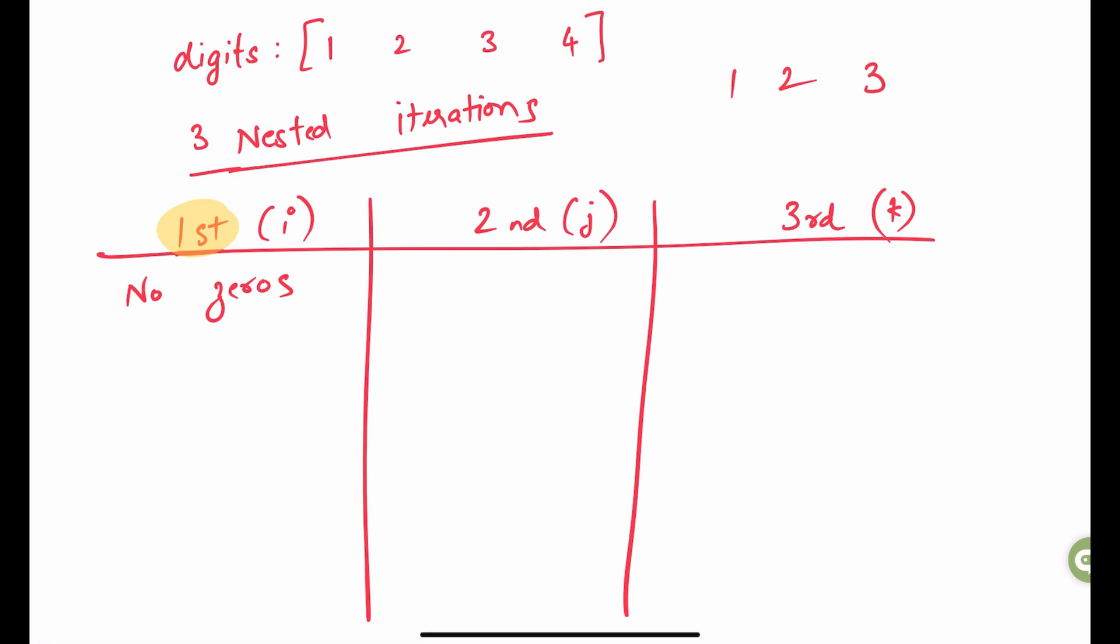Starting with the first one, we cannot have zeros in this position as it is given to us in the problem statement. For the second iteration, i should not be equal to j as we can't use the same digit more than one times.